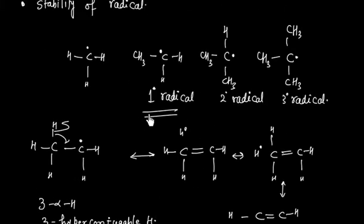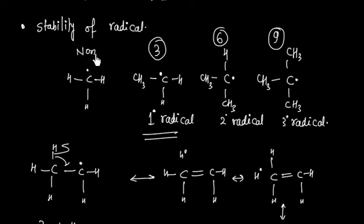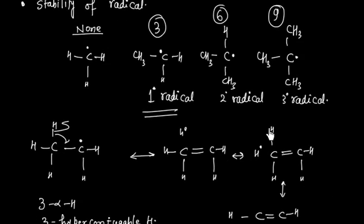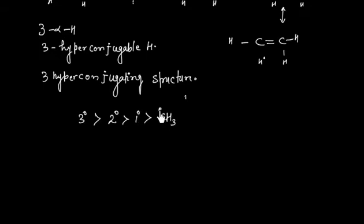For a primary radical, we have three hyperconjugable hydrogens; for secondary, six; for tertiary, nine; and for methyl radical, none. Therefore, the tertiary radical is the most stable, followed by secondary, then primary, and the methyl radical is the least stable.